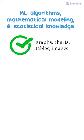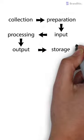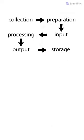While this might seem simple, when it comes to massive organizations like Facebook and Twitter, this entire process needs to be performed in a very structured manner. The steps to perform it include: collection, preparation, input, processing, output, and storage.